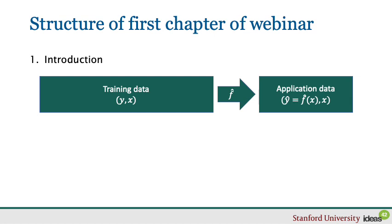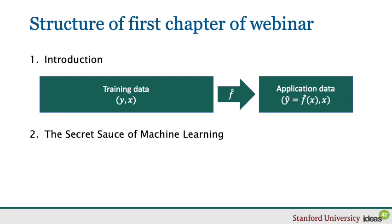In this module, I want to ask how machine learning does so well at predicting, especially in very complex data and using very complex functional forms. I will then discuss some implications of the way machine learning works, and I will particularly be interested in asking how machine learning applies when we are actually interested in estimation, including causal estimation.